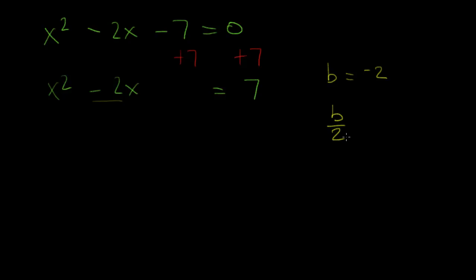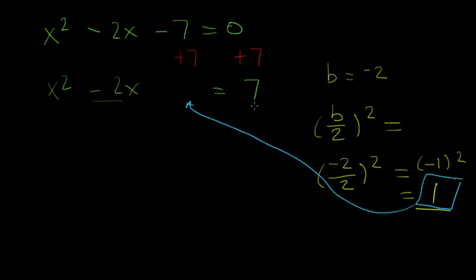I'm going to find what half of that is and square it. That is going to be -2 divided by 2 squared, which equals -1 squared, which equals 1. So this number here, I'll box it with blue so it stands out. That number goes right there, and it's going to go right here as well.